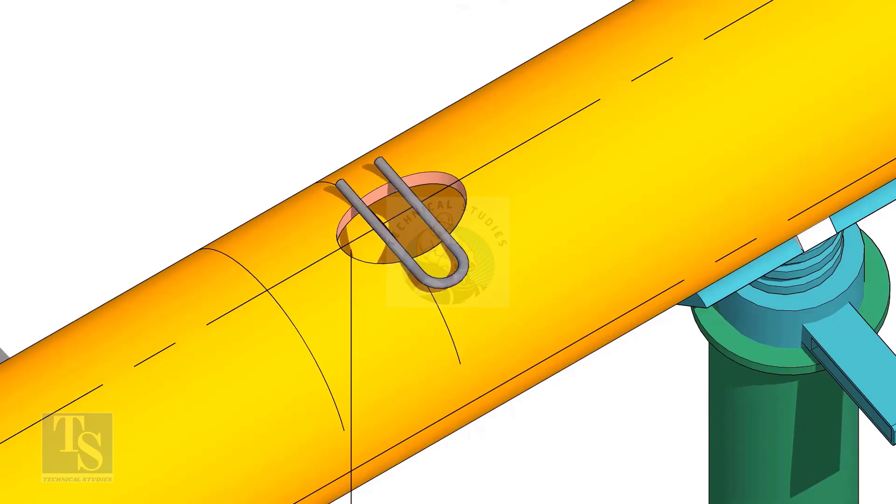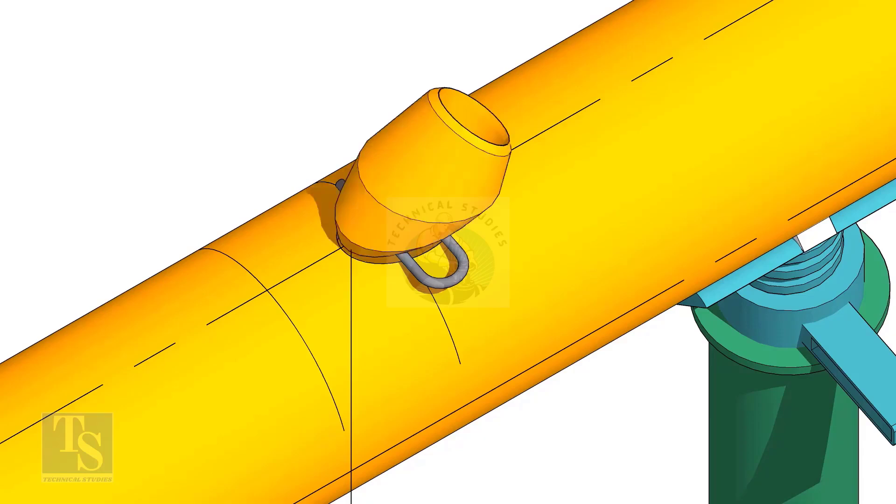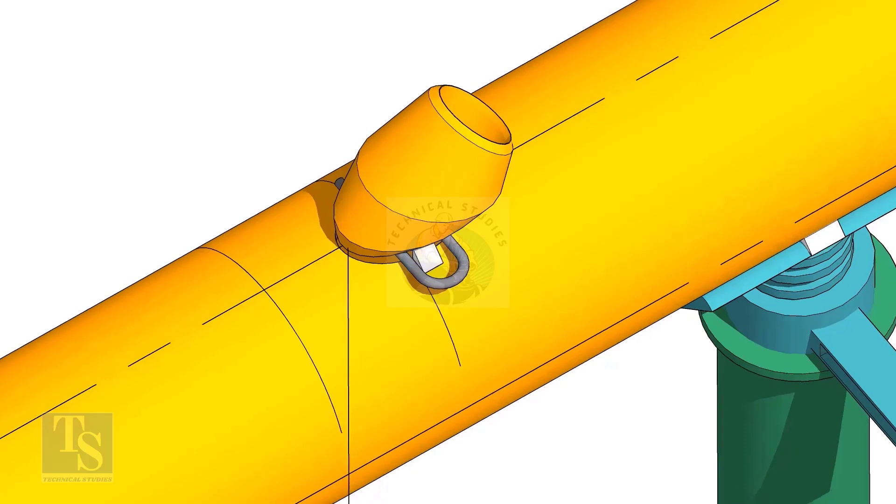Cut and clean the opening on the header. Put the laterolet on the center of the hole. Tack weld on one side.